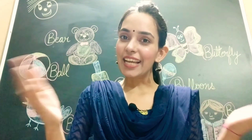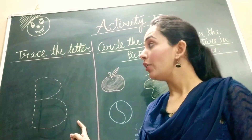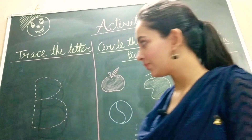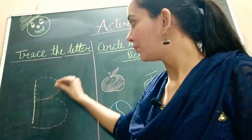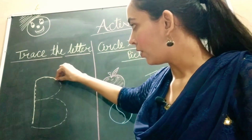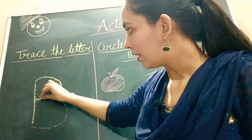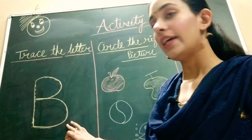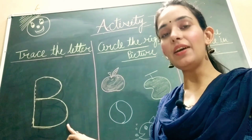Now friends, it's time for an activity. Children, in our first activity we have to trace the letter B. First of all, one standing line, then one half curve, then another half curve — it makes letter B.